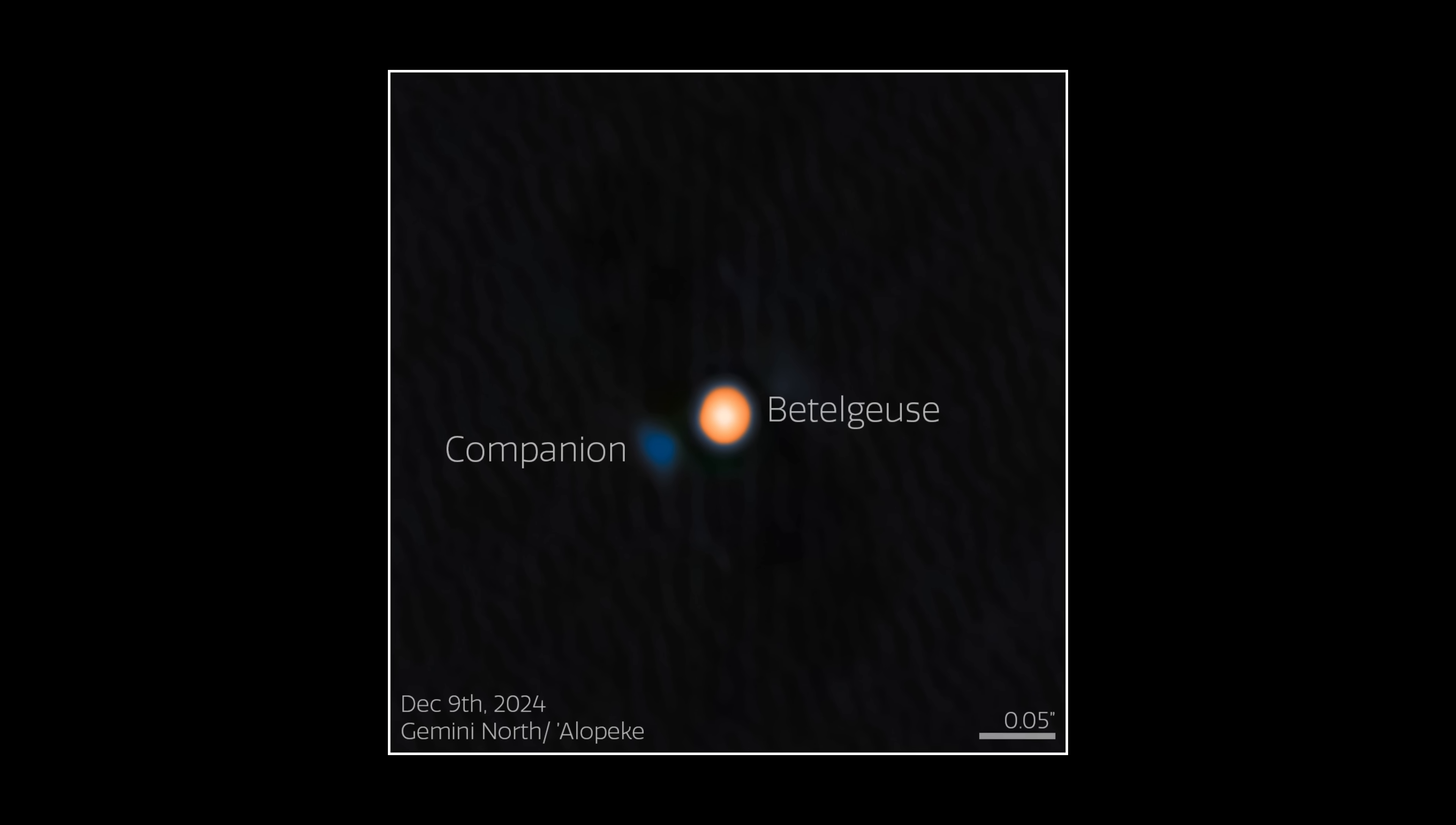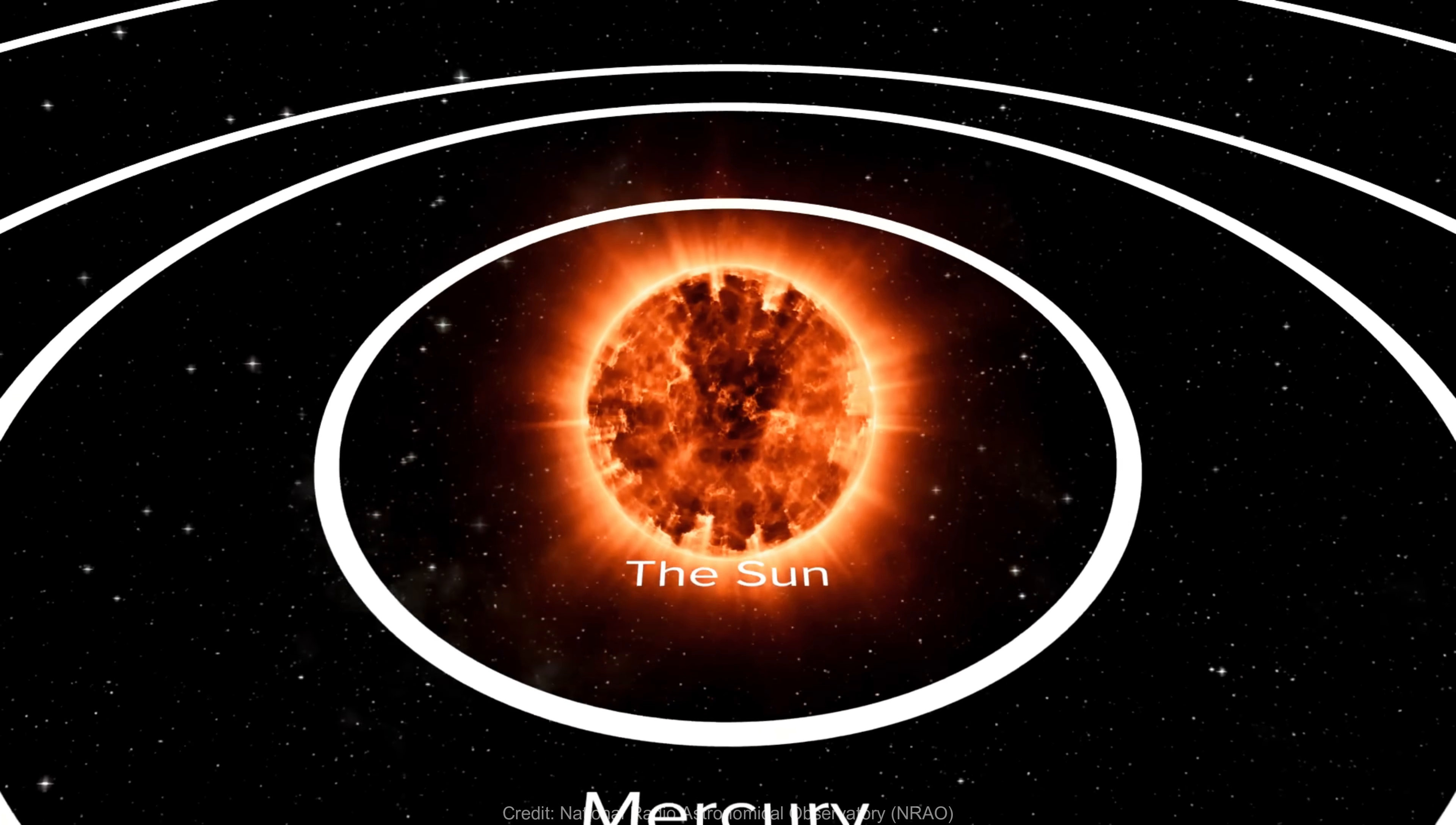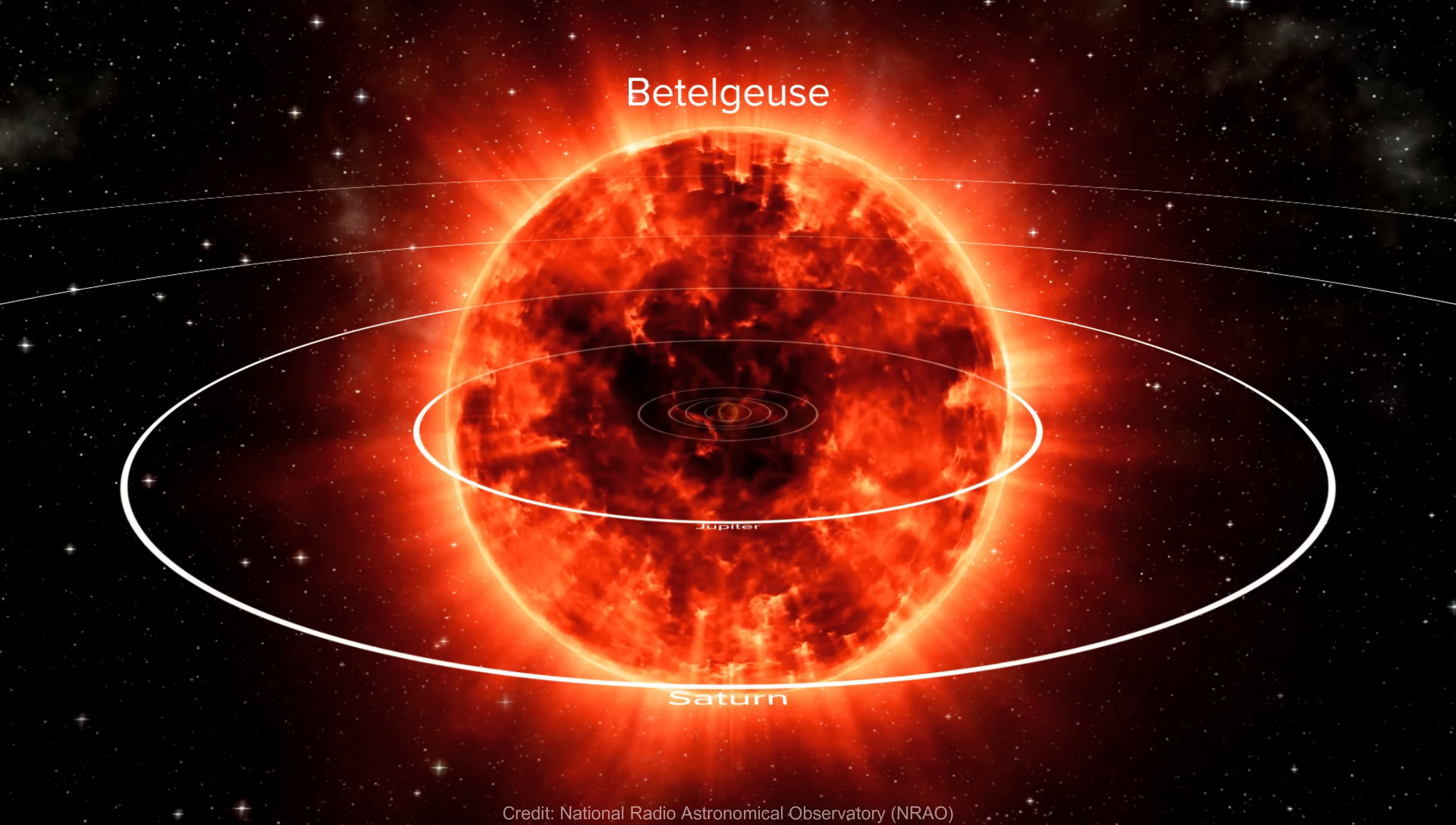But this delay doesn't mean that Betelgeuse's companion is in for a long life. We're certain that Betelgeuse will eventually explode in a cataclysmic supernova, though the exact timing remains a mystery. After all, though Betelgeuse is only around 10 million years old, the fact that it is 700 times the size of our sun means it has burned through most of its nuclear fuel much faster than our 4.6 billion year old star.